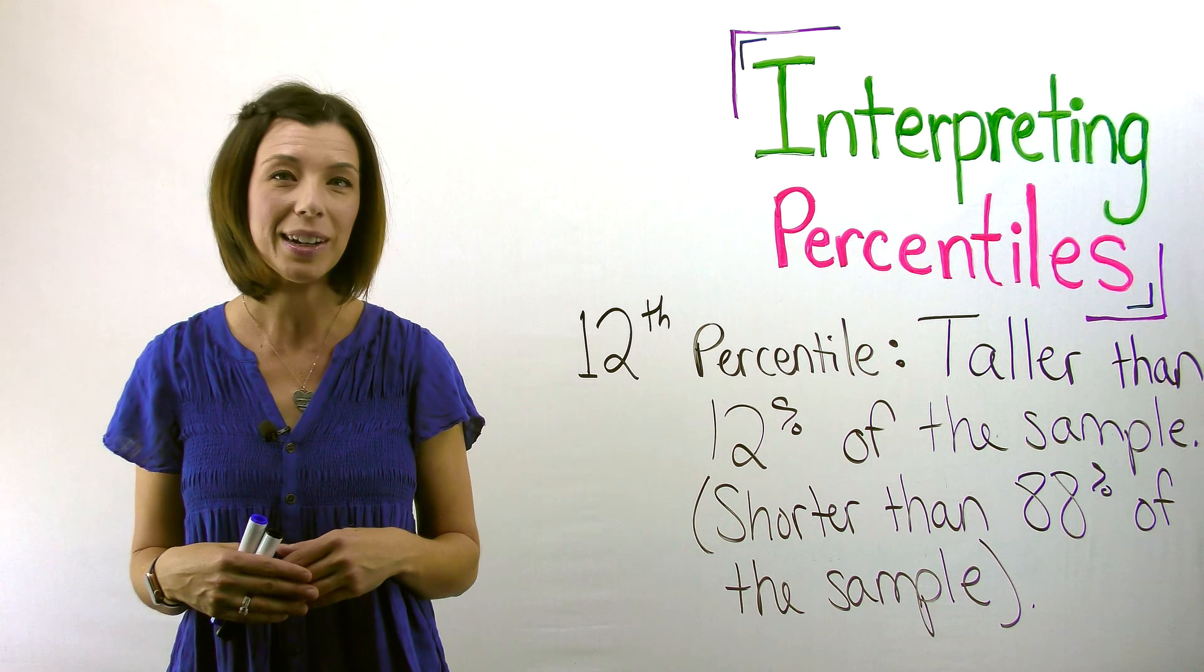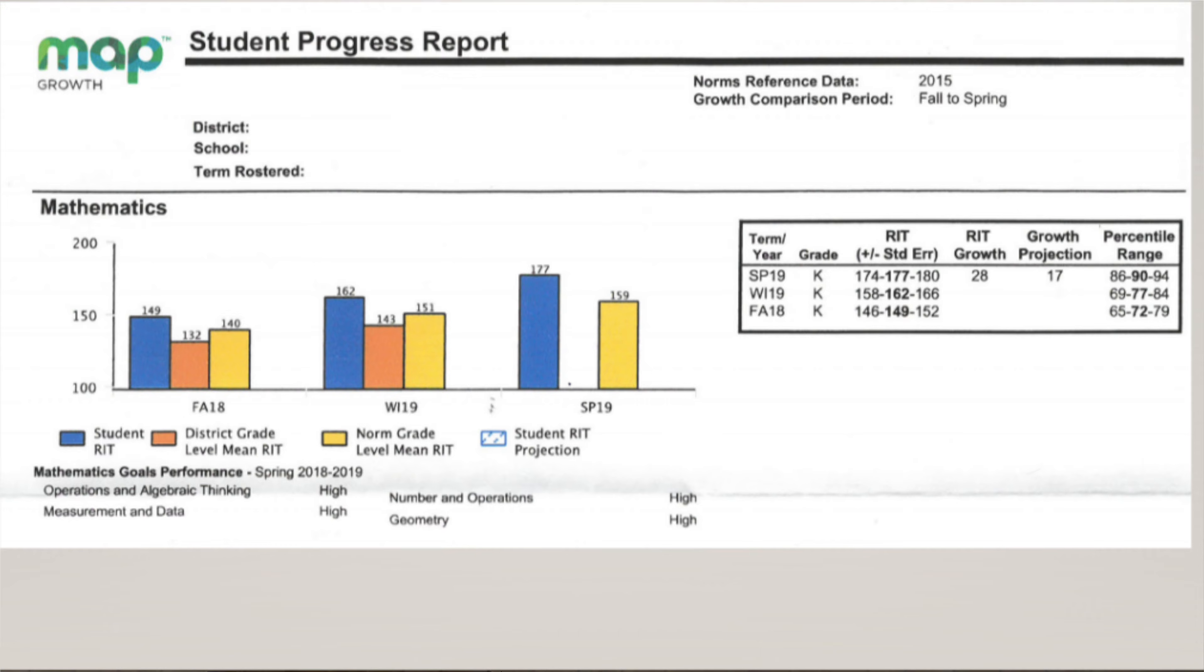Let's take an example here. In front of you here, I've got some data from a MAP test. This is a benchmark test. And you can see this is a student who is progressing. And if you take a look right here at the percentile range on the right-hand side, you can see that they're going to give you a percentile range for the student.